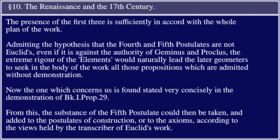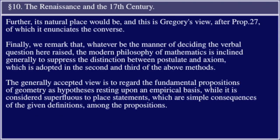all of the propositions which are admitted without a demonstration. Now the one which concerns us is found stated very concisely in the demonstration of Book One, Proposition Twenty-Nine. From this, the substance of the Fifth Postulate could then be taken and added to the postulates of construction or to the axioms, according to the views held by the transcriber of Euclid's work. Further, its natural place would be — as this is Gregory's view — after Proposition Twenty-Seven, to which it enunciates the converse.